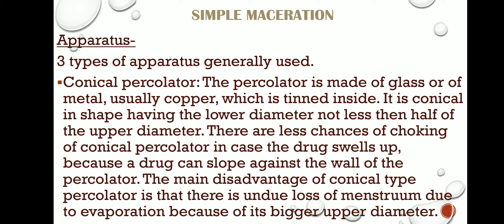First, the conical percolator — this is the most commonly used. It is made of glass or metal, usually copper metal, which is generally tinned inside. It is conical in shape, as the name suggests, meaning the upper diameter is wider than the lower diameter. There is less choking of the conical percolator in case the drug swells up when the solvent enters the cells.